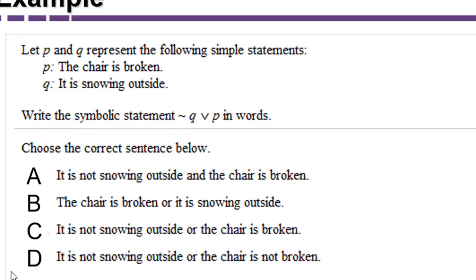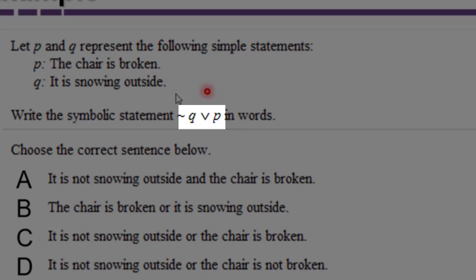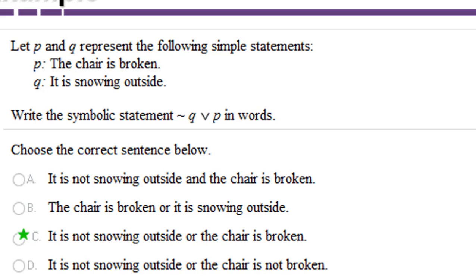Here's an example from the MyMathLab homework for MGF1106. Let p represent 'the chair is broken' and q represent 'it is snowing outside.' We want to write in words: ~q ∨ p. The tilde is negation and the right-side-up v is 'or,' so this reads: 'It is not snowing outside or the chair is broken.'